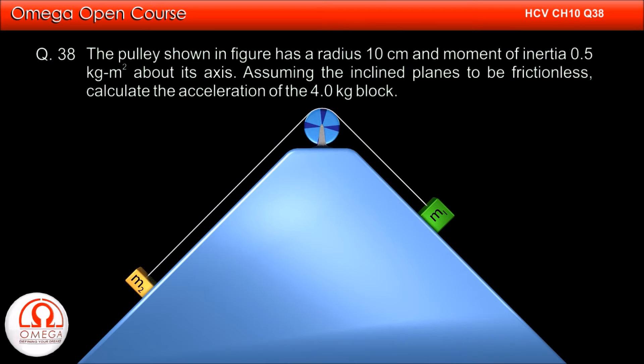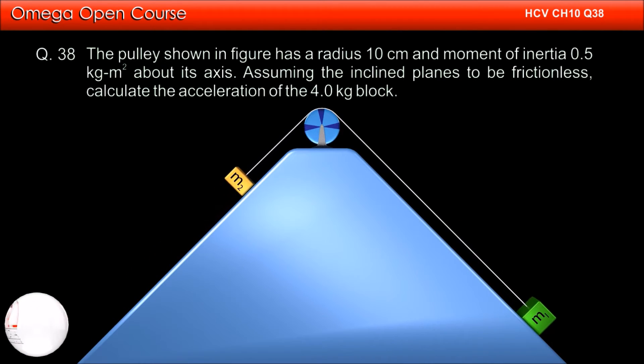The pulley shown has a radius of 10 cm and moment of inertia 0.5 kg m² about its axis. Assuming the inclined planes to be frictionless, calculate the acceleration of the 4 kg block.